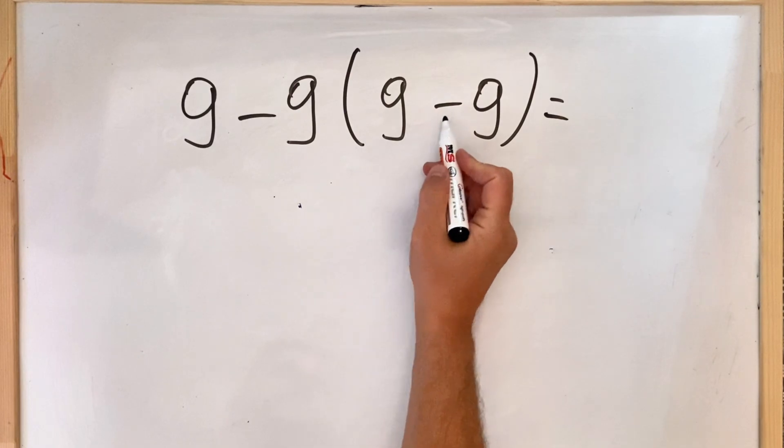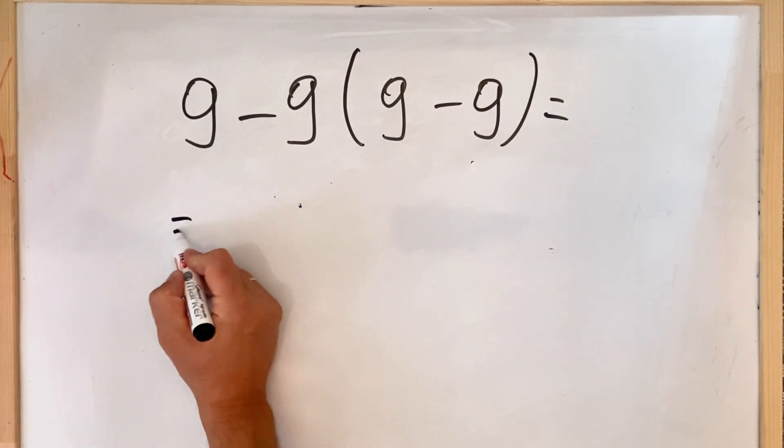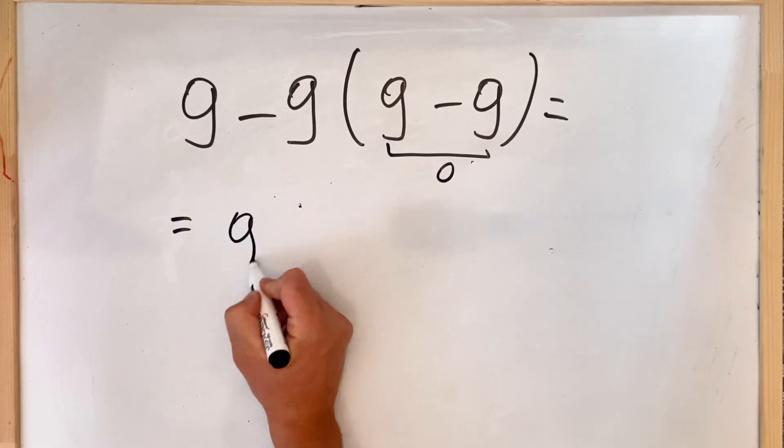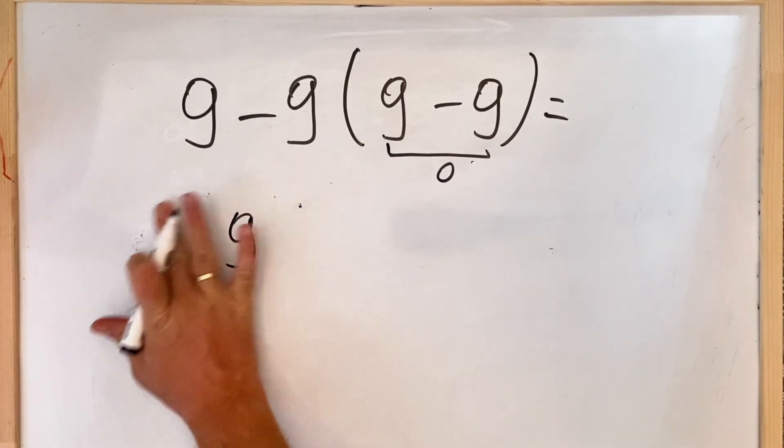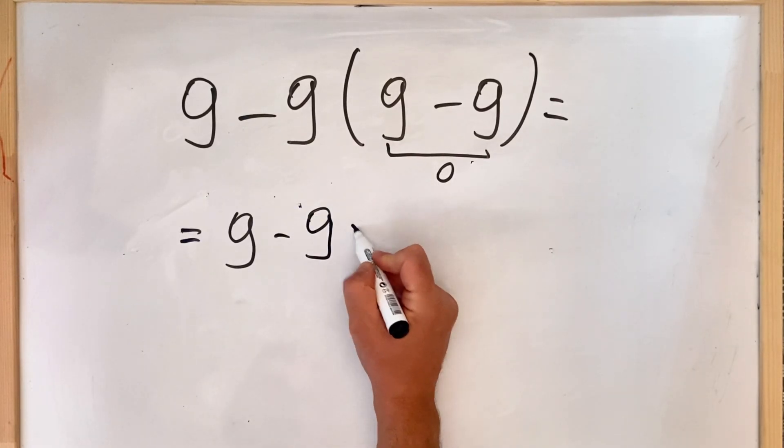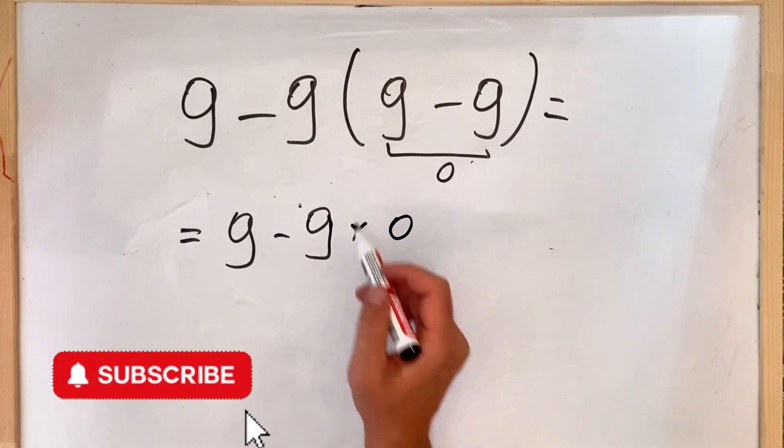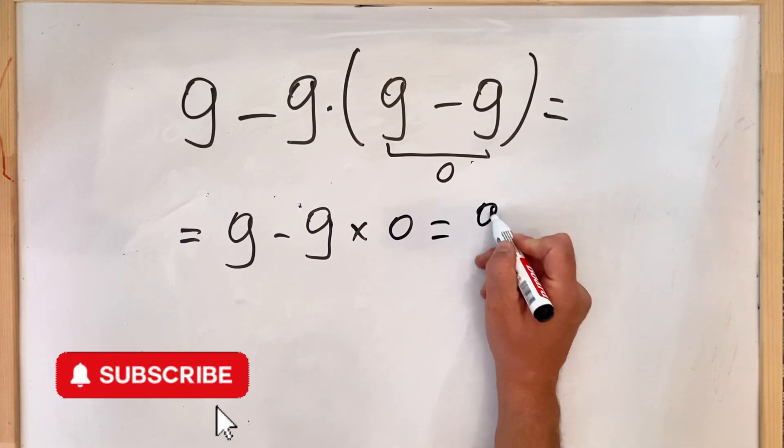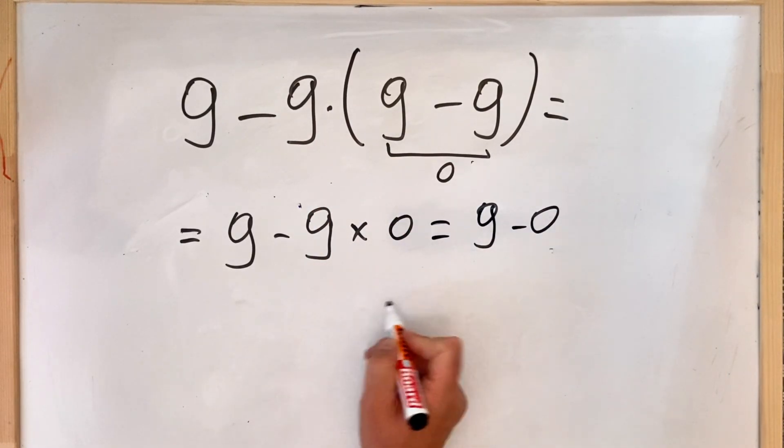So we have 9 minus 9 in parenthesis is 0, so here it's 0. Therefore we get the following equation: 9 minus 9 multiply by 0. Because you all know here we have multiplication, and it's 9 minus 0, which equals to 9.